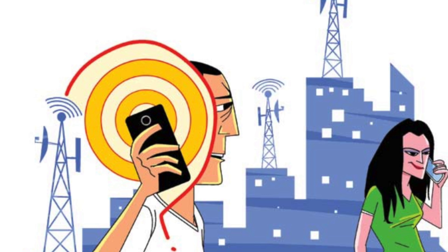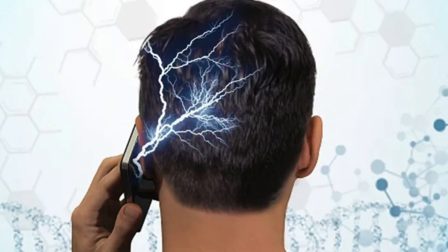A mobile phone is used to transmit radio frequency. That is why a little electromagnetic field is developed. This electromagnetic field is basically energy. This field is absorbed by our body, absorbed by our tissues. That is why we have radiation.